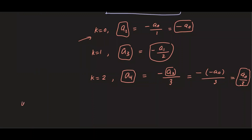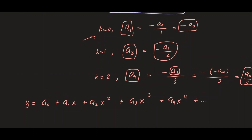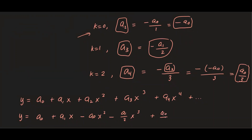Our solution is y equals a₀ plus a₁x plus a₂x² plus a₃x³ plus a₄x⁴ plus so on. Substituting the coefficients: a₀ and a₁ are arbitrary constants, a₂ is negative a₀, a₃ is negative a₁ over two, and a₄ is a₀ over three. So y equals a₀ plus a₁x minus a₀x² minus (a₁/2)x³ plus (a₀/3)x⁴ plus and so on.